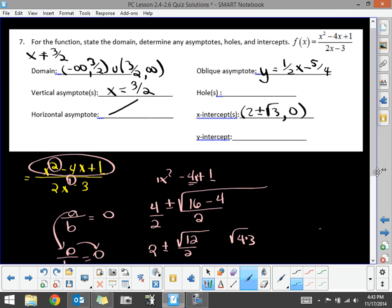And then the y-intercepts are when we place a 0 in for the x's. So if I place a 0 in for the x's, I just have a positive 1 divided by a negative 3. So my y-intercept is the ordered pair 0 comma negative 1 third.